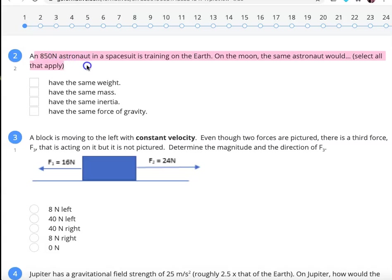Our 850 Newton astronaut trains on Earth. On the moon, that astronaut would have the same mass and the same inertia. Mass is proportional to inertia, so the more massive the astronaut, the more inertia they would have. And if their mass didn't change, the inertia wouldn't change.